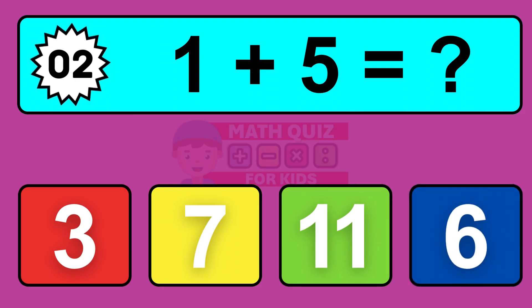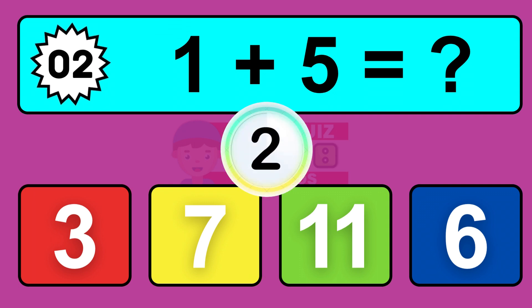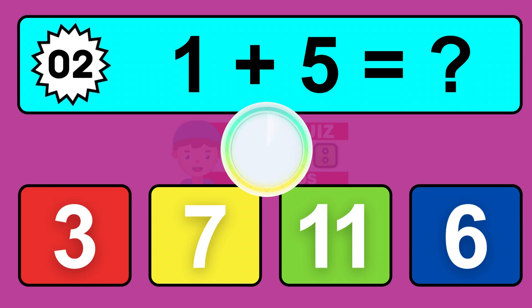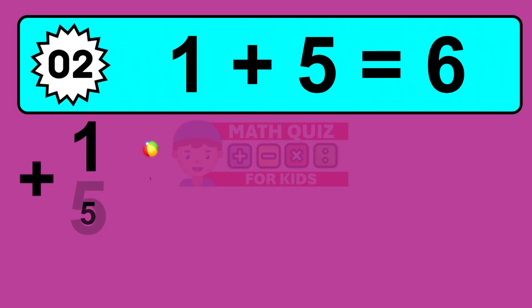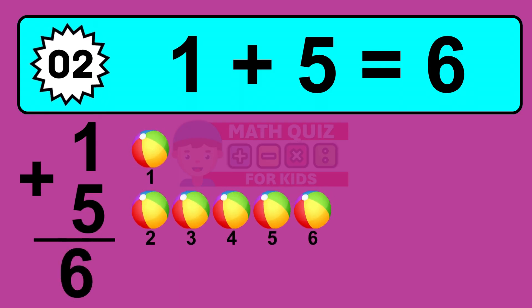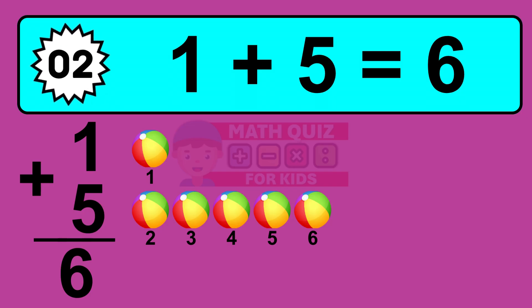Question 2. 1 plus 5 equals what? The answer is 1 plus 5 is 6. Let's count it: 1, 2, 3, 4, 5, 6.